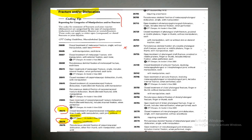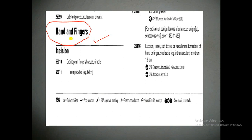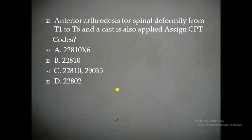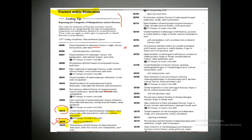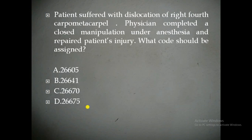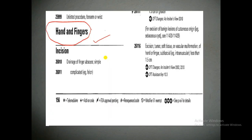The correct answer is 26675. In the musculoskeletal system, you have to check the CPT code under each anatomical location, identify which procedure the physician is performing and to which location, and then select accordingly. So 26675 is the correct answer. In the CPC exam, musculoskeletal system CPT codes can be ruled out easily using this approach.